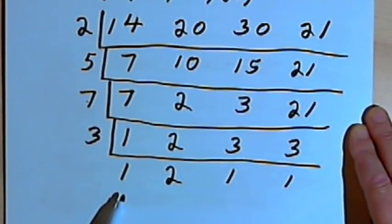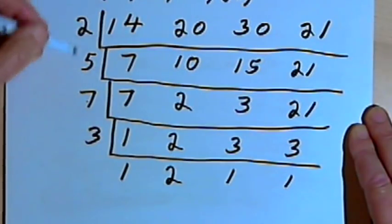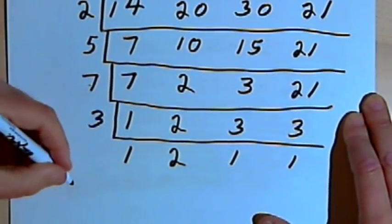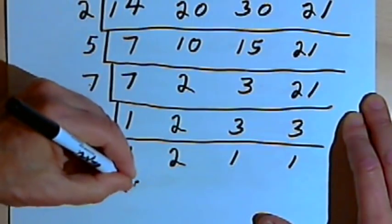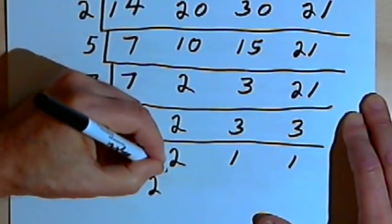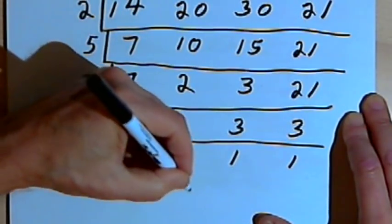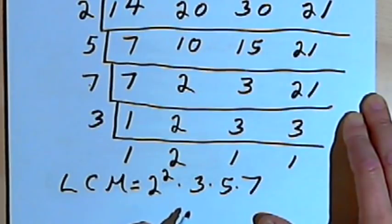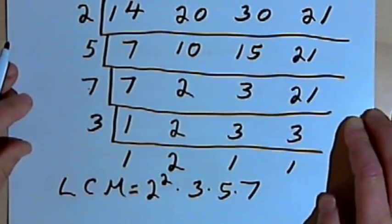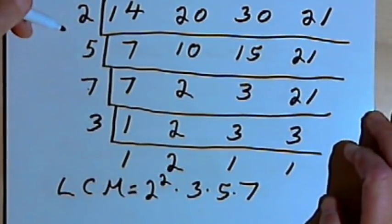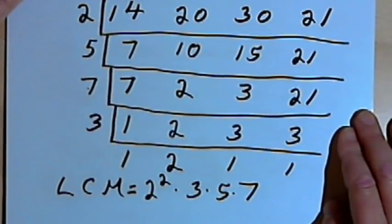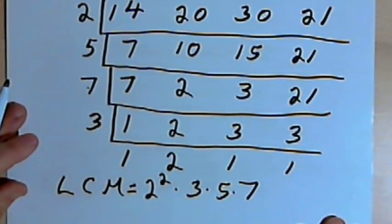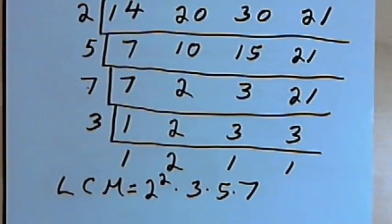Now I've got prime numbers along the bottom — the only thing duplicated is 1s, and they don't matter. I've got prime numbers down the left side, and all of those prime numbers multiply together to make my LCM. So the least common multiple is 2 squared times 3 times 5 times 7 — which is actually the same LCM I got for the last problem. This method is really useful when you've got a lot of numbers to find the LCM of all at the same time, or you can use it for just 2 numbers if you prefer it over the prime factorization method. That's it for now — take care, I'll see you next time.